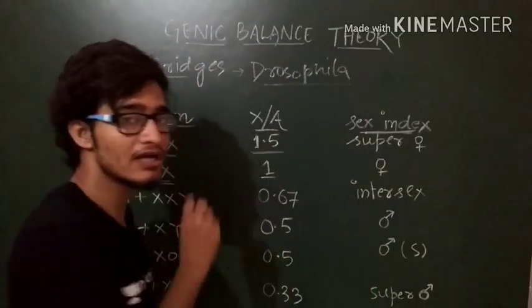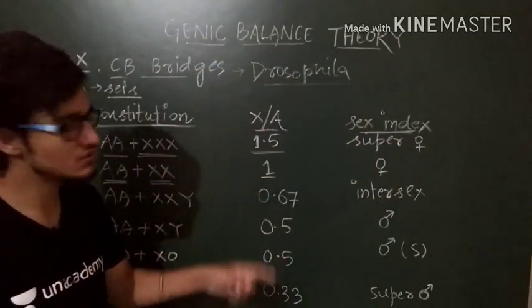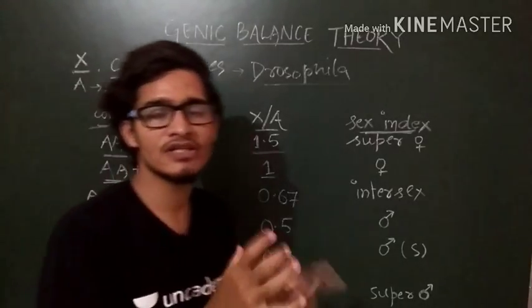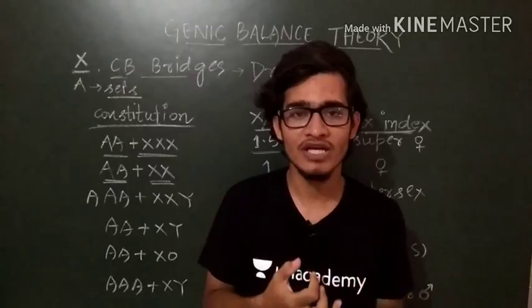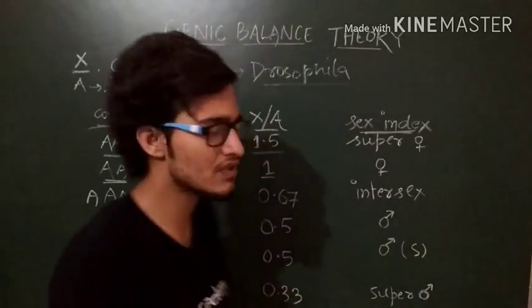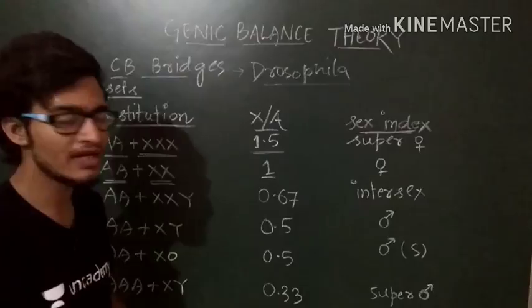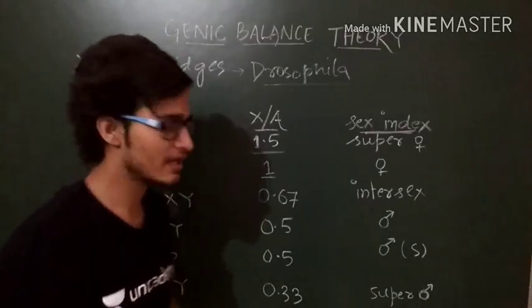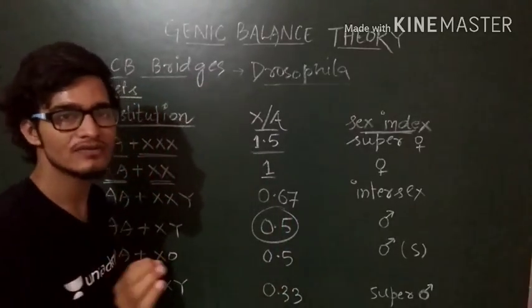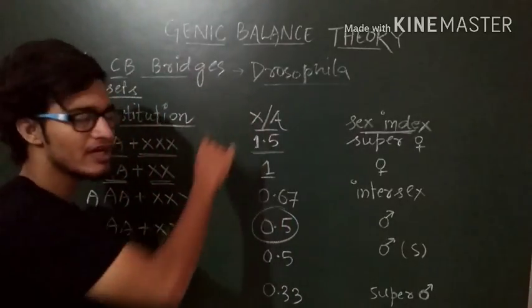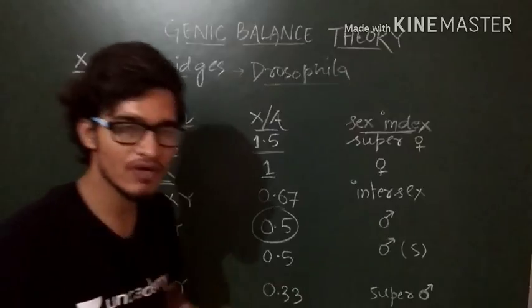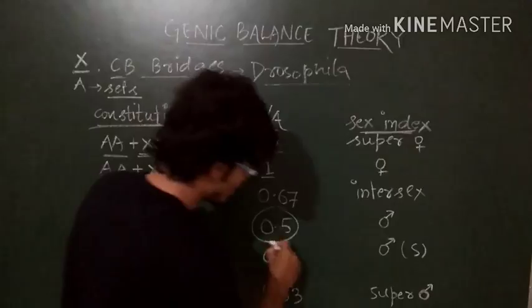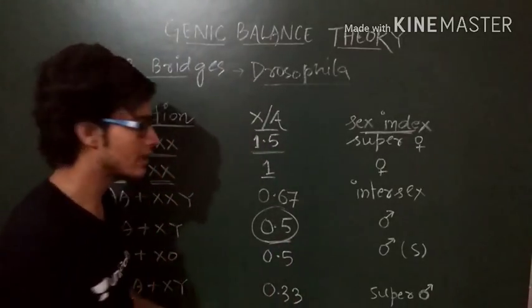This is the chromosomal constitution and this is the X by A ratio which is derived from that constitution. Now we are going to have to know how to know whether the organism, whether the Drosophila is male or female or sterile or fertile. Any kind of thing can be easily concluded from this. CB Bridges has said that the organism having 0.5 X by A ratio, they are male.